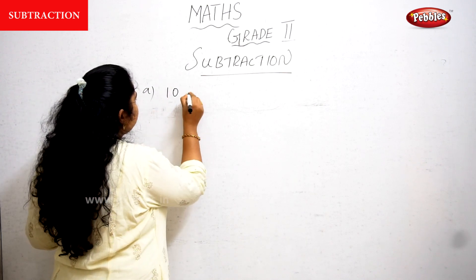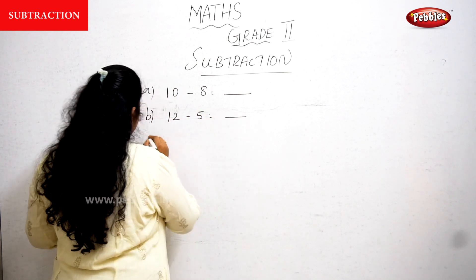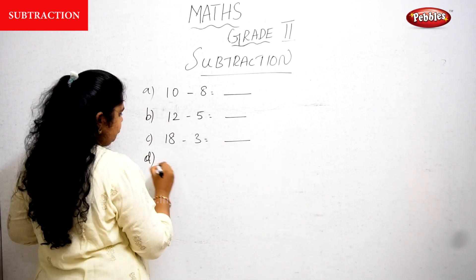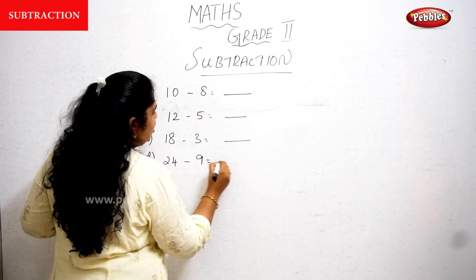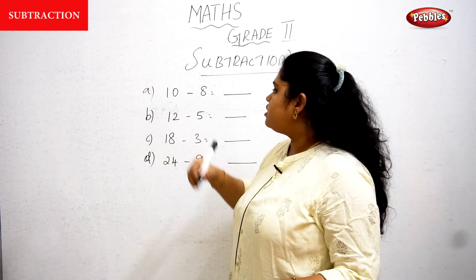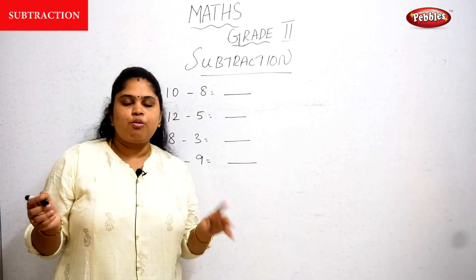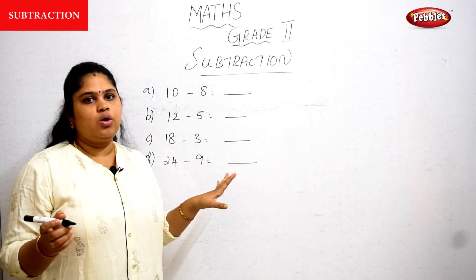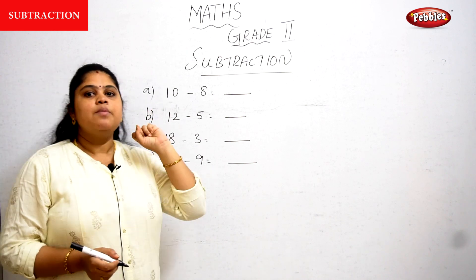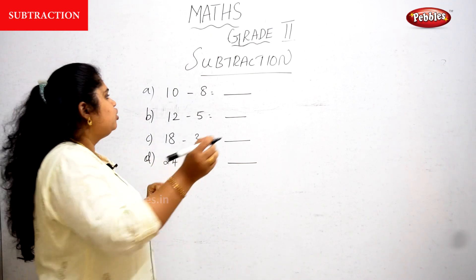For example, 10 minus 8, or 12 minus 5, 18 minus 3, 24 minus 9. So we will perform one two-digit number and one single-digit number. The first question is 10 minus 8. We want to perform a backward counting from 10, counting back 8 steps: 9, 8. So two fingers are left. The answer is 2.